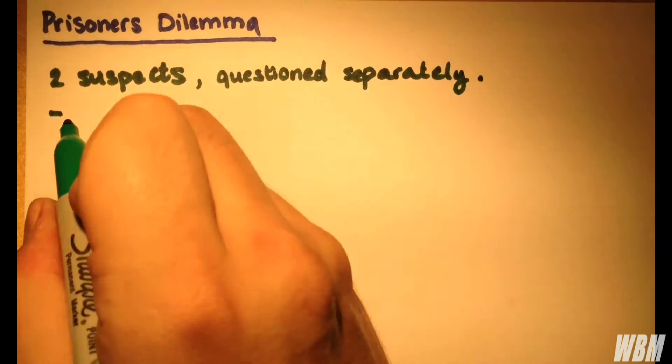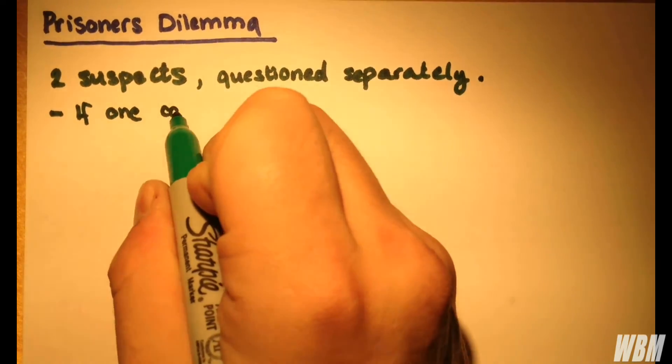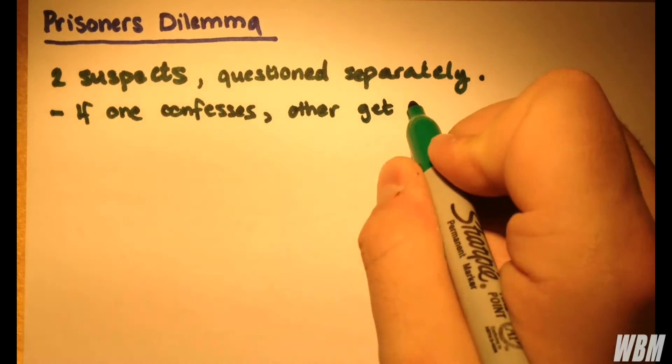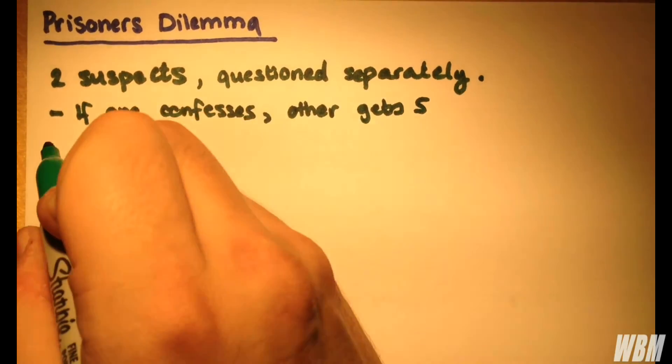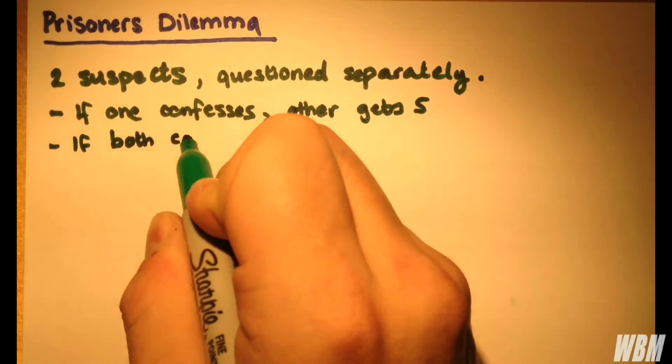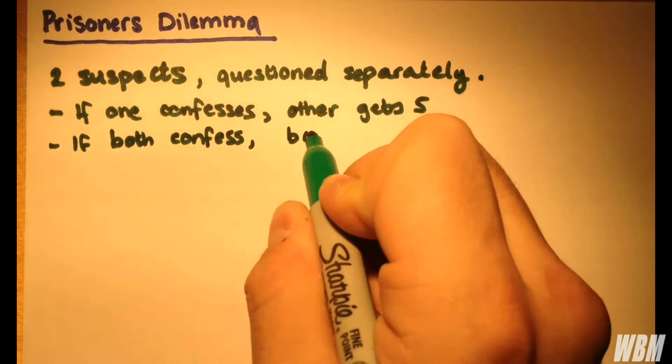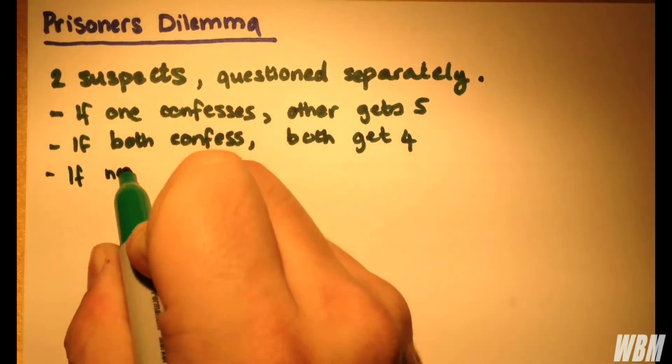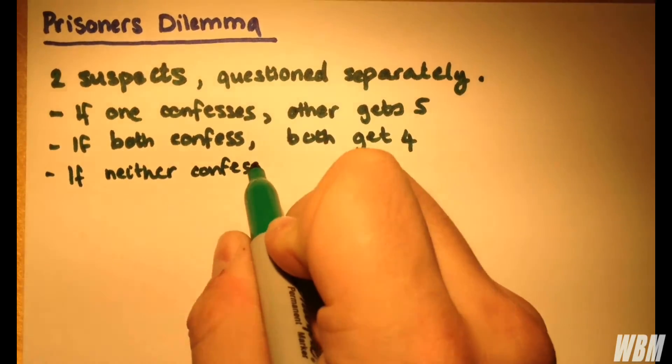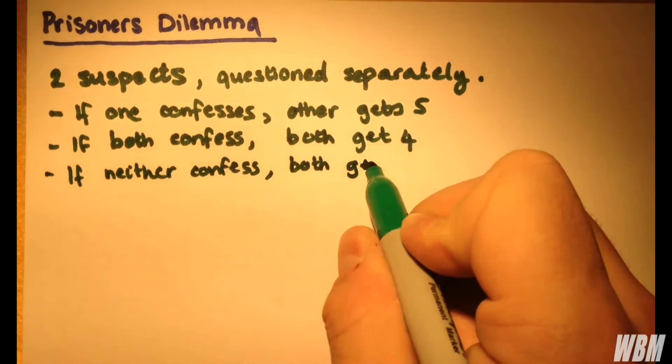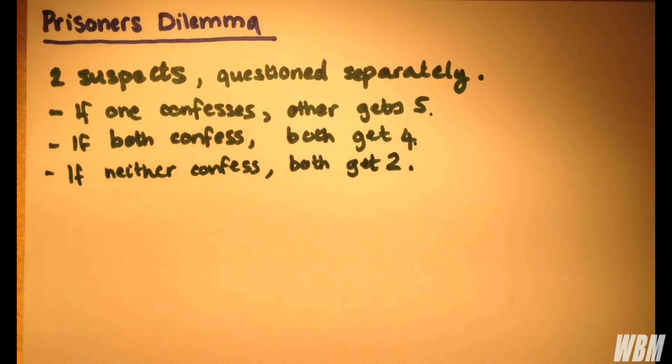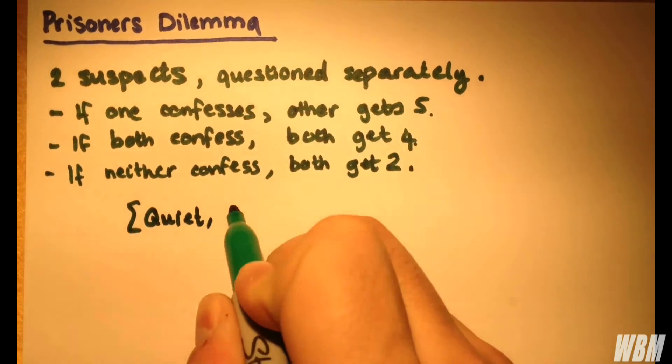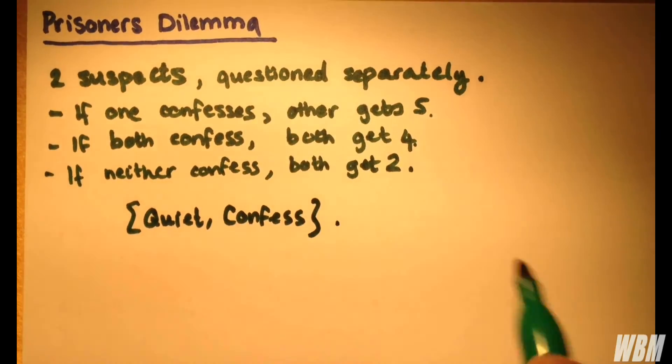If one confesses and the other one doesn't, the other guy will get five years. If they both confess, they both get four years. If neither confesses, both get two years. So how do we decide which is the best option for the suspects? To remain quiet or to confess?